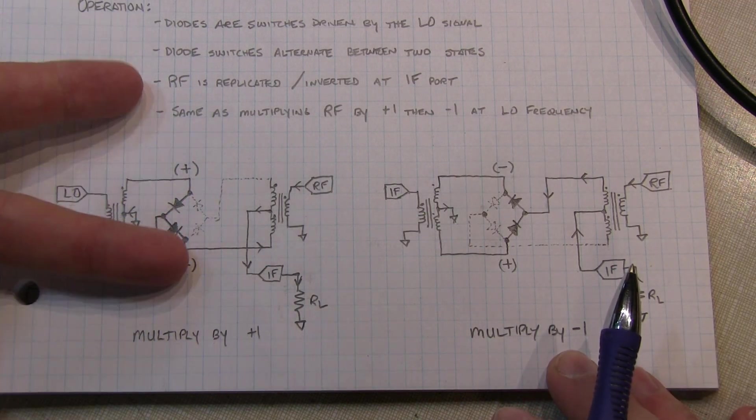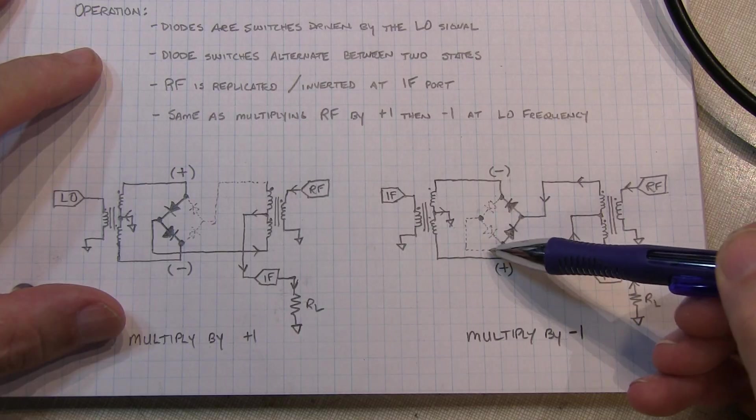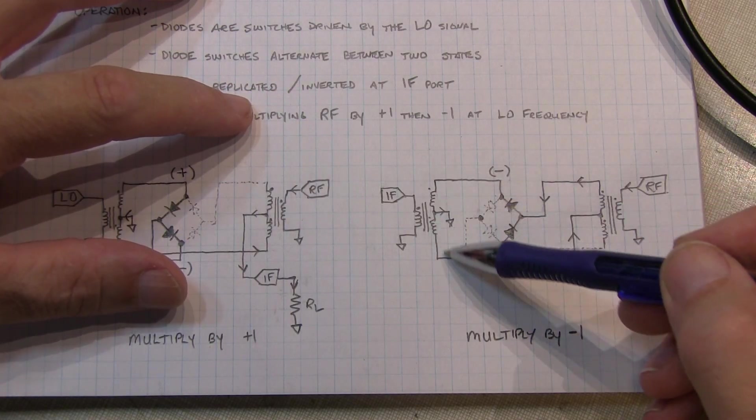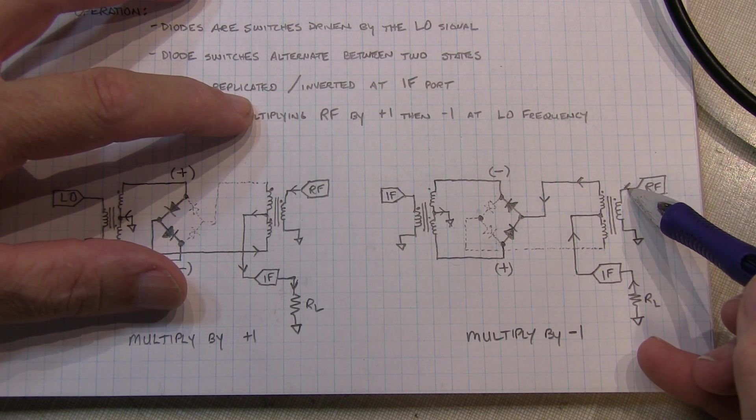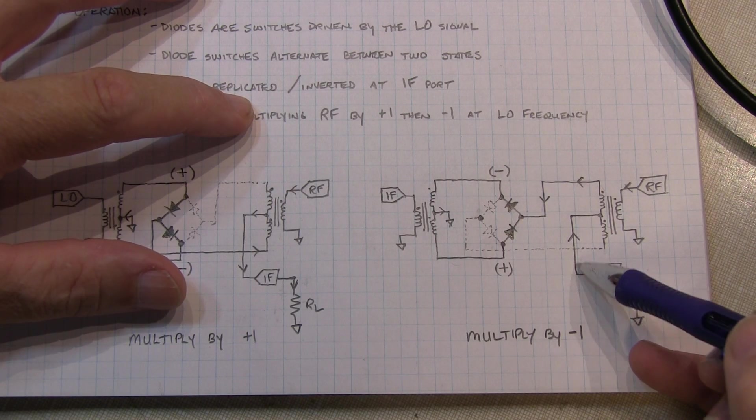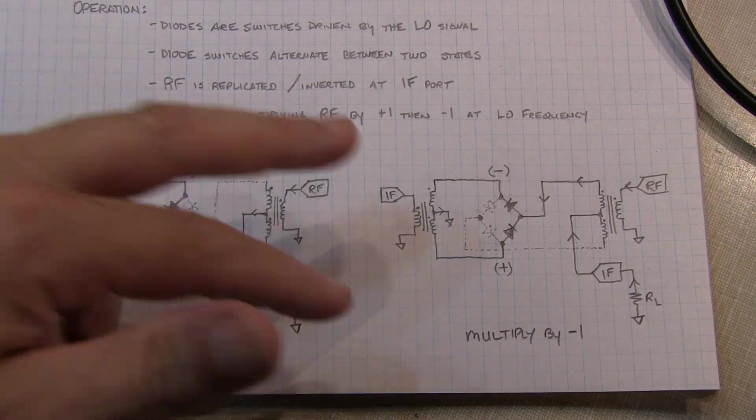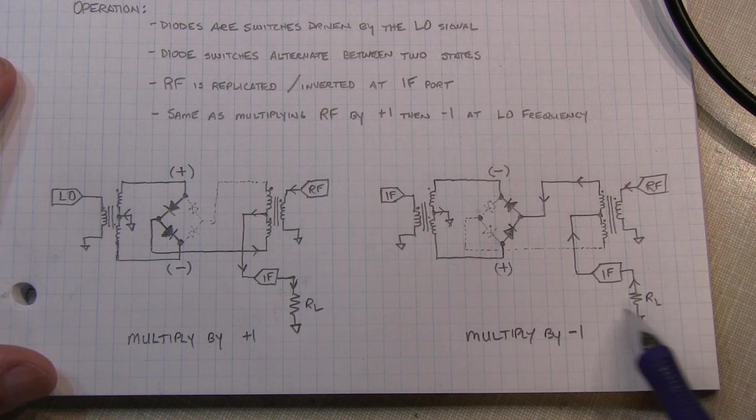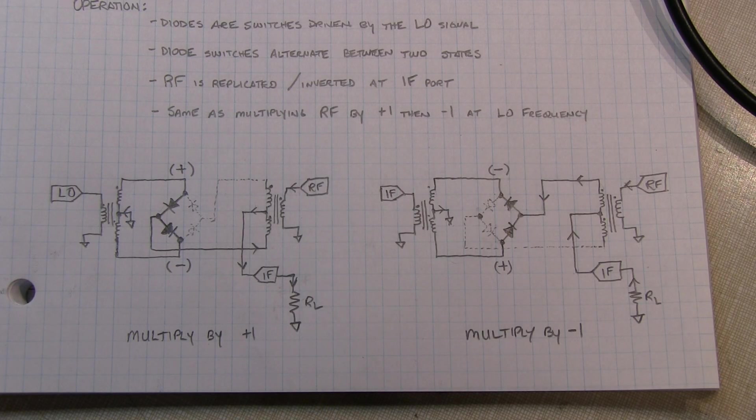When the local oscillator switches and changes polarity, we're over here now. And in that case, these two diodes get shut off. So this path gets completely taken out and we're left with these two diodes turned on. Again, shorting out the same thing here. So essentially this point here looks like ground. So that same RF signal going in that same direction here is now going to cause current to flow out of the phasing dot here to ground. So that means the current is flowing up this way and in the other direction through the load resistor. So we can see the switching action of the local oscillator basically causes a change in polarity or inversion of phase of the RF signal appearing at the load. So that's essentially our multiplying of plus one and minus one. And that's how the diode ring mixer works.